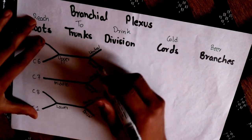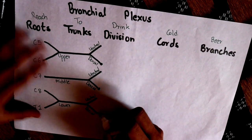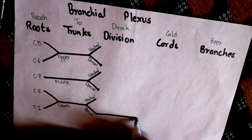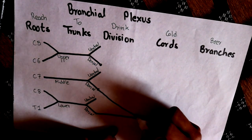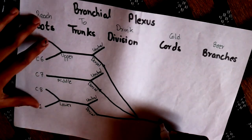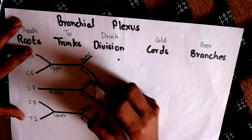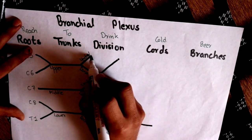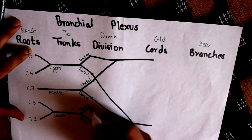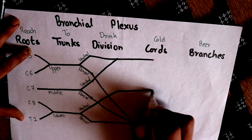We are going to bring all the dorsal division points to a single point. Then another single point where we bring the ventral divisions of the upper and middle trunk. And the ventral division of the lower trunk will come in the middle.